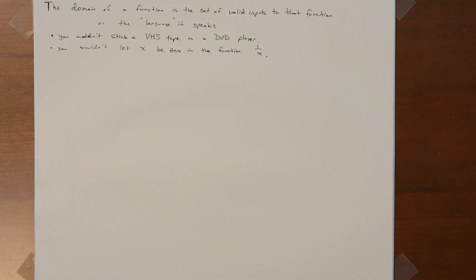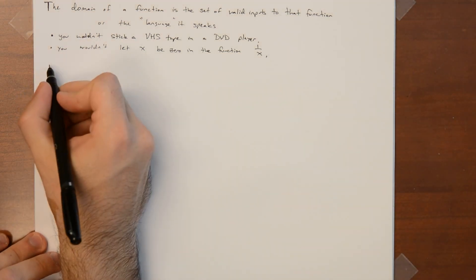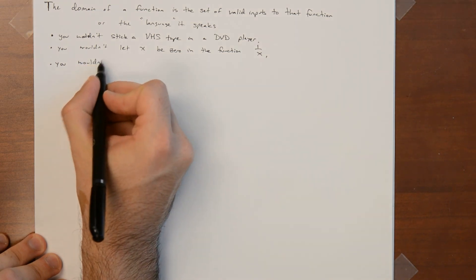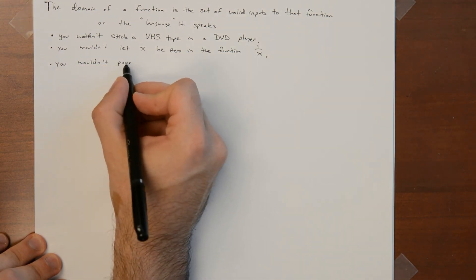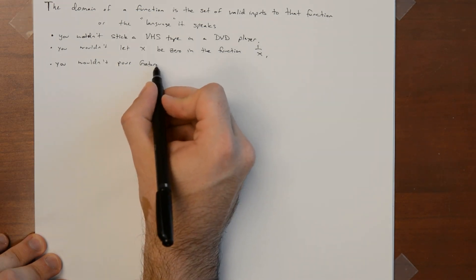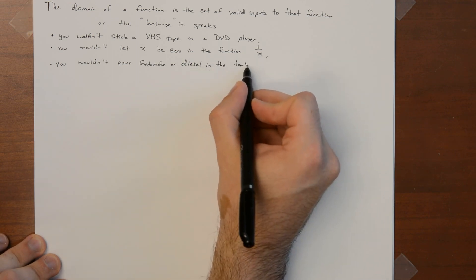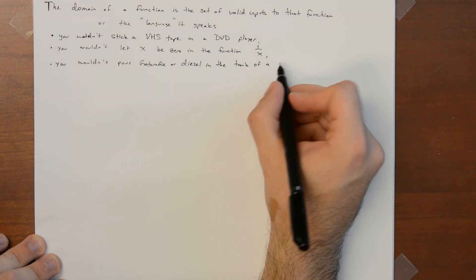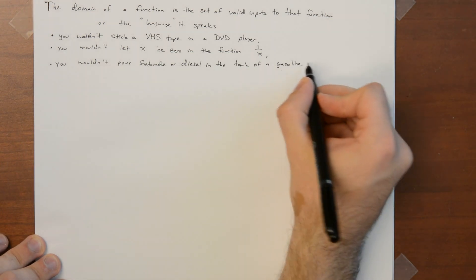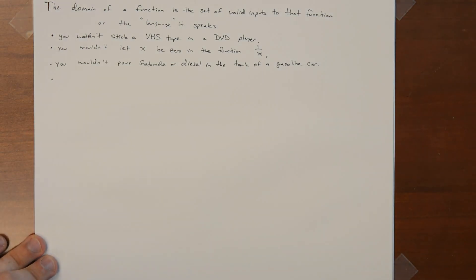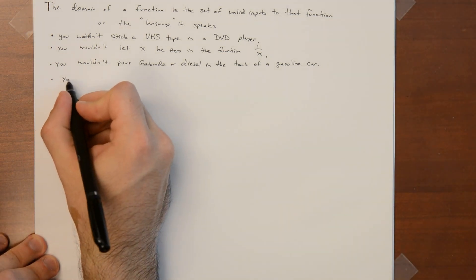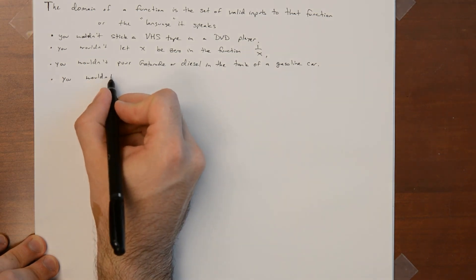Likewise, you wouldn't pour Gatorade in the gas tank of a car and you wouldn't pour diesel in the gas tank of a gasoline vehicle. It just doesn't make sense. And that's really the same as saying you would never plug a negative number into the function that takes the square root. It would be wildly irresponsible.